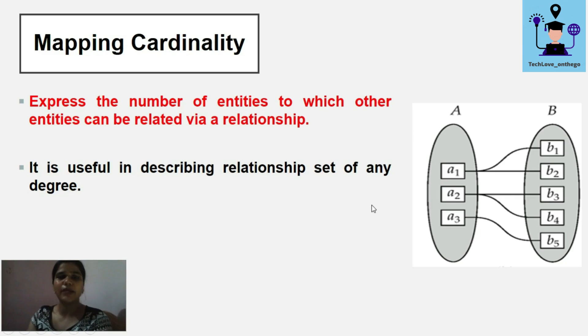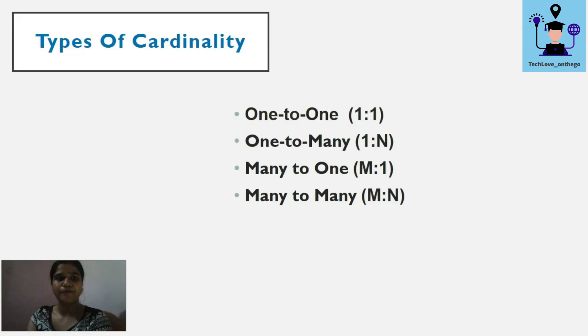Mapping cardinality is useful in describing relationship sets of any degree. There are four types of cardinality: one-to-one, one-to-many, many-to-one, and many-to-many.